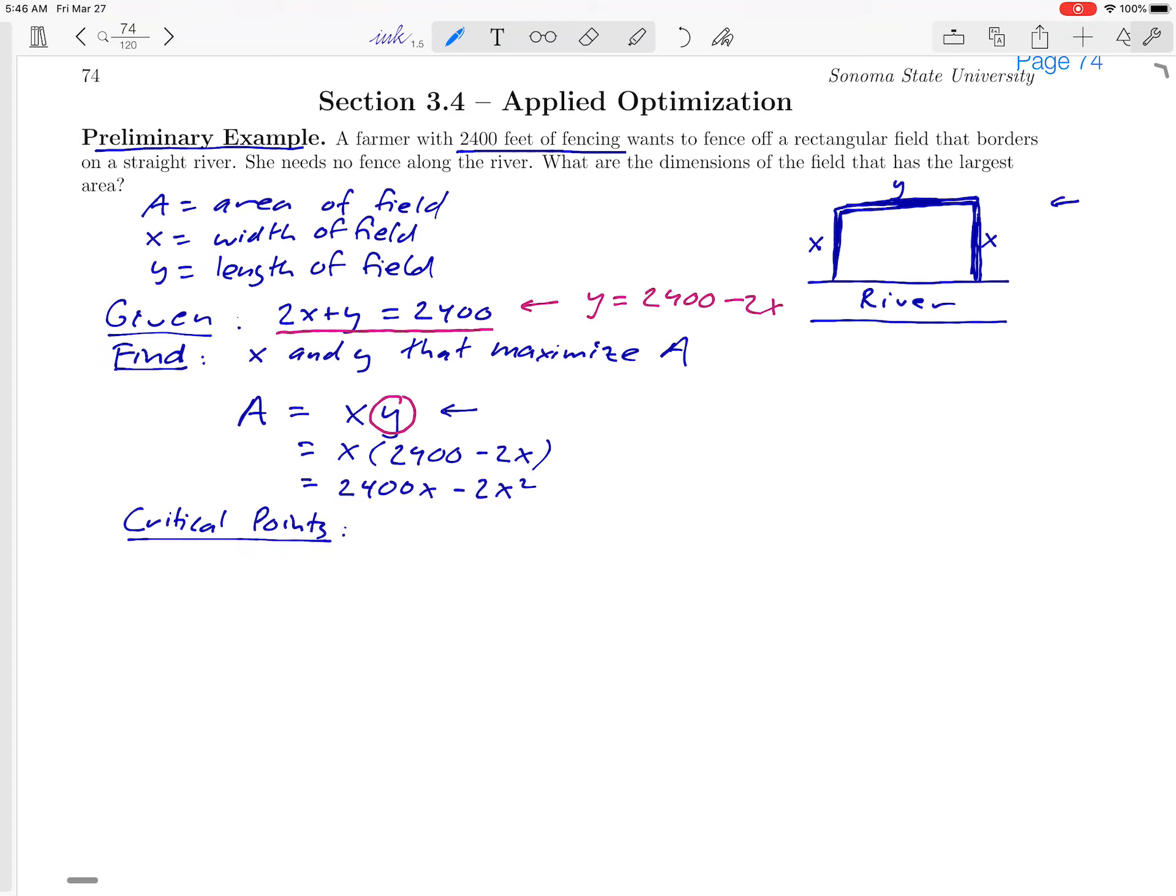We are ready to find critical points here. That's going to send us on our way to figuring out what the maximum area is. We'll take the derivative of A. Looks like all we need is the power rule. So 2400x derivative is just 2400. Derivative of minus 2x squared is minus 4x. And we're going to set that equal to zero. Doing the algebra there, we could add the 4x to both sides. And if we divide through by 4, it looks like x is going to be 2400 over 4. That's just going to give us 600. So we've just got one critical point in this case.